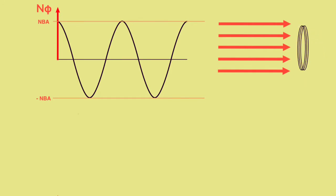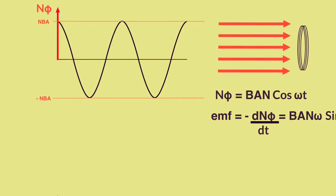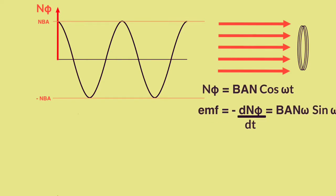So this Nφ curve here is a cosine because it starts at the highest value and comes down. It follows the pattern of BAN cos(ωt), because it's got an amplitude of BAN and then it just follows a cosine thing after that.